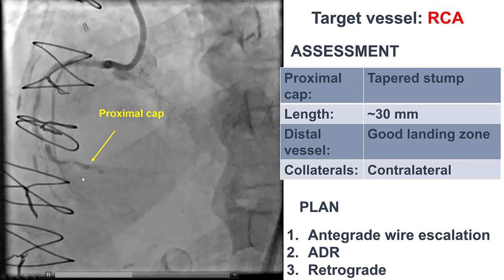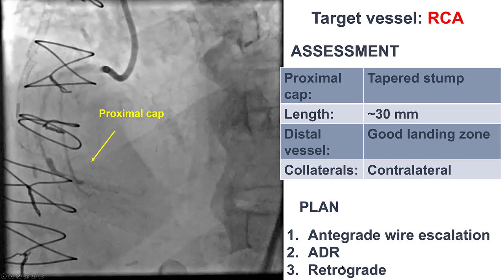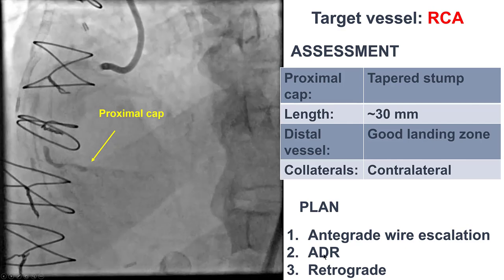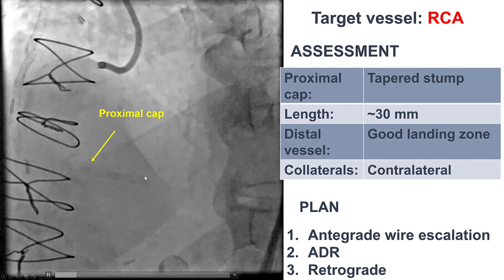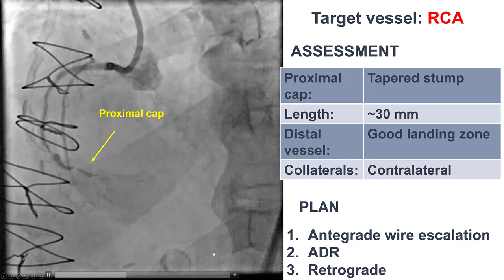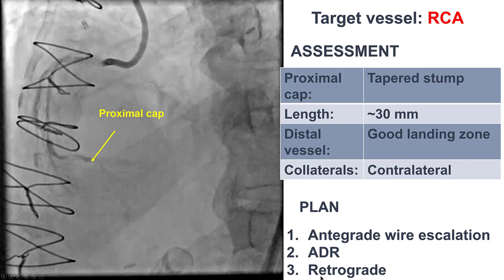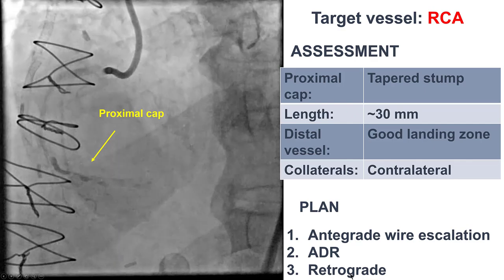Our plan was to try antegrade wiring first. If it didn't work, antegrade dissection re-entry, re-entering before the bifurcation, and then if that did not work, to go retrograde through the saphenous vein graft.